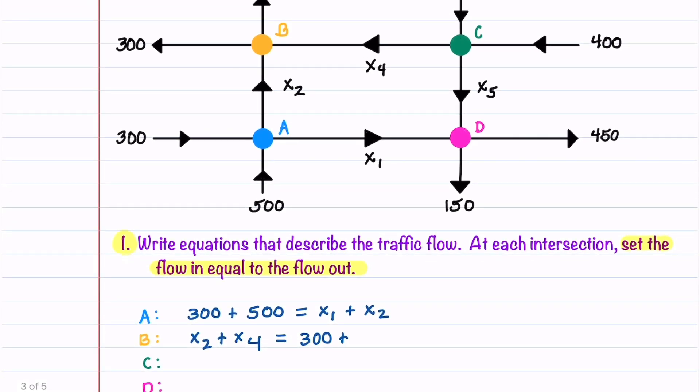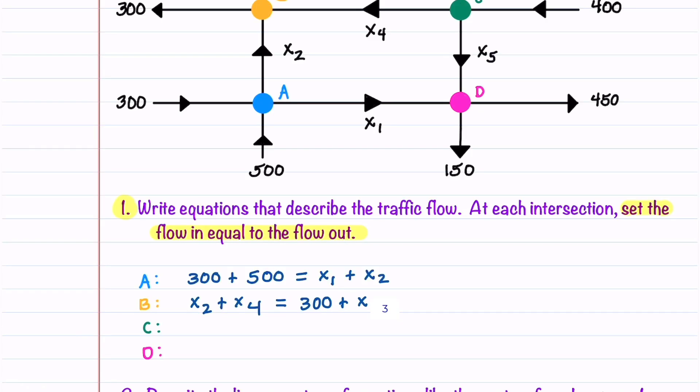I would suggest you stop the video and see if you can write down the equations for C and D. For C, we have 100 and 400 going in and x4 plus x5 going out. At intersection D, we have x1 and x5 going in and 150 and 450 going out.